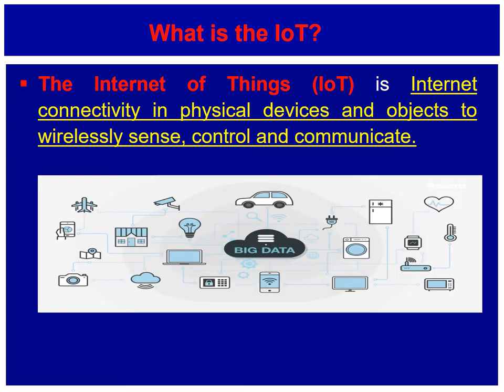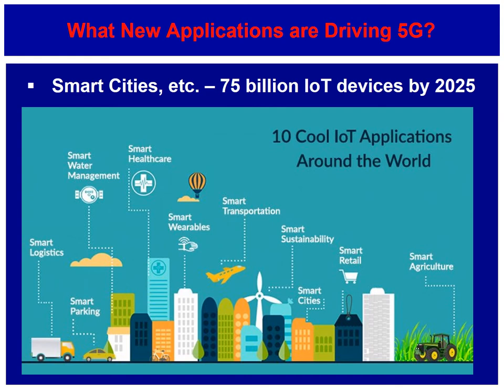IoT examples include security in your house, avionics, your washing machine, your car — sensors will be everywhere and wirelessly connected. The security camera senses motion outside, controls and locks the front gate, and communicates via the Internet with the police or yourself. There are many applications of IoT in smart cities: smart agriculture, smart wearables, smart healthcare — a huge growth area — and smart water management. We could expect 75 billion IoT devices by 2025.